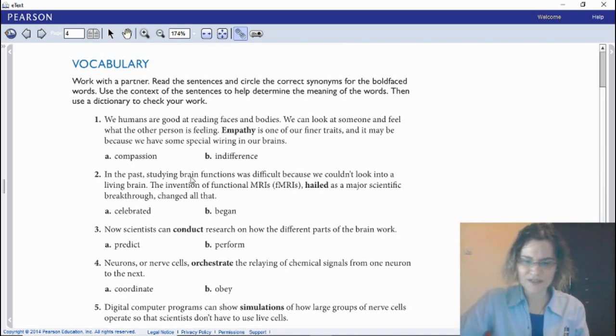For instance, let's try number one. 'We humans are good at reading faces and bodies. We can look at someone and feel what the other person is feeling. Empathy is one of our finer traits, and it may be because we have some special wiring in our brains.' What would be a good synonym for the word empathy? A or B? Yeah, of course, it's A. It's compassion. You can pause your video and answer number two until ten. Go ahead.